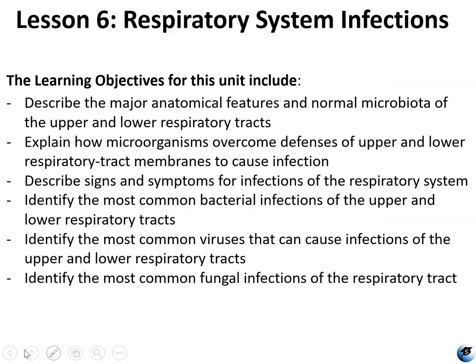The learning objectives for this unit include describing the major anatomical features and the normal microbiota of the upper and lower respiratory tracts. We'll talk about how microorganisms overcome defenses of the upper and lower respiratory tract membranes, and we'll talk about the signs and symptoms for infections of the respiratory system, the most common bacterial, viral, and fungal infections of the respiratory tract.